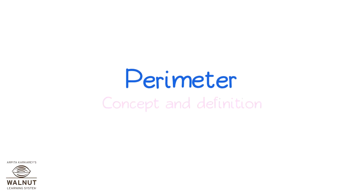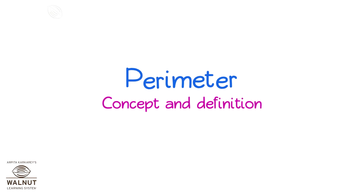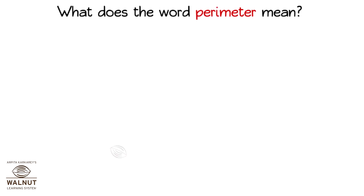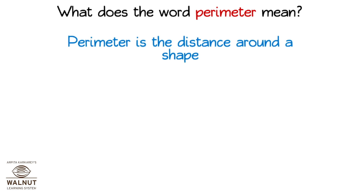Perimeter: Concept and Definition. What does the word perimeter mean? Perimeter is the distance around a shape.